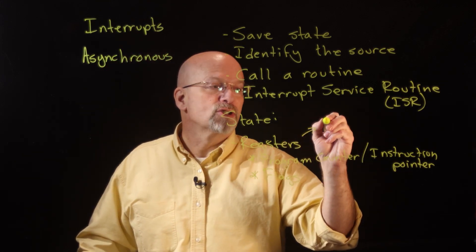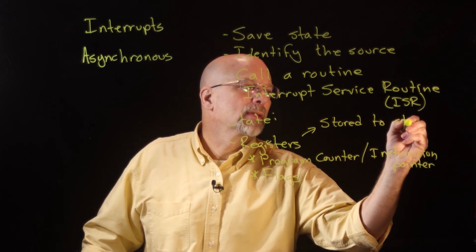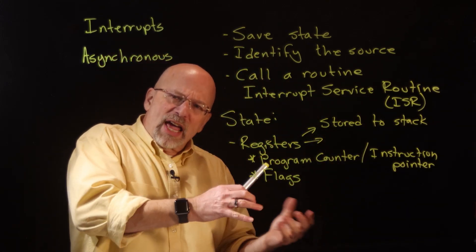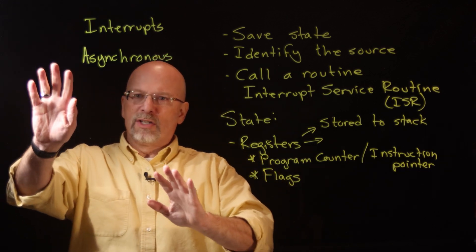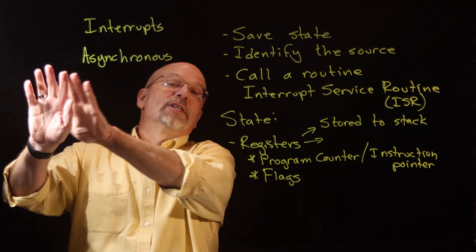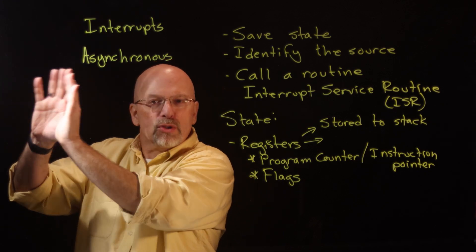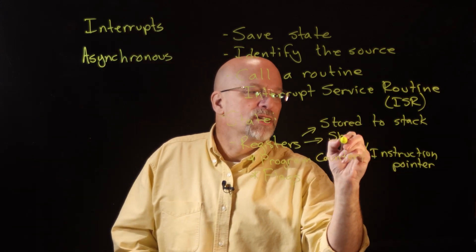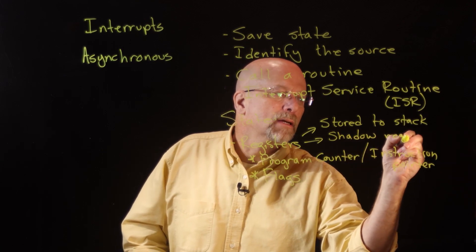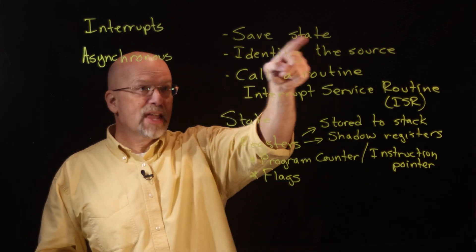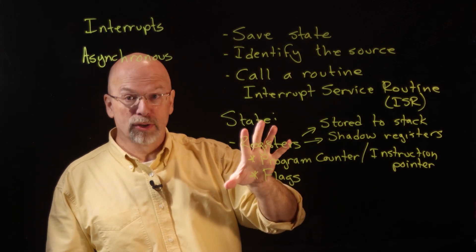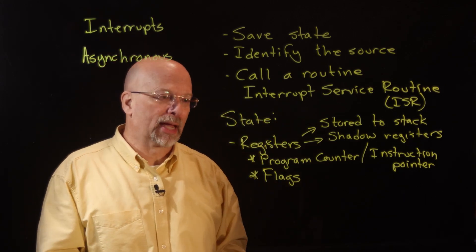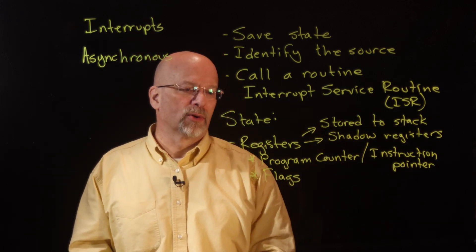Another way: registers could be stored to the stack. Some processors have a whole different set of registers — they'll have one set that the application uses, and when we get interrupted, we go to a new set of registers and leave those completely untouched. We simply operate out of a new hidden set of registers called shadow registers. So saving the state means ensuring all the registers get put back exactly the way they were when we asynchronously interrupted our application — this can be done with the stack or with shadow registers.